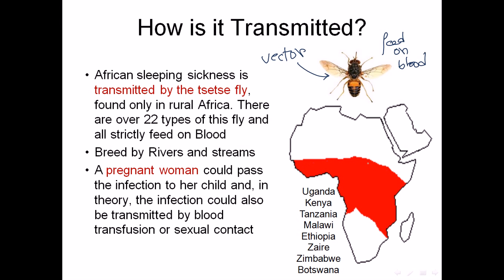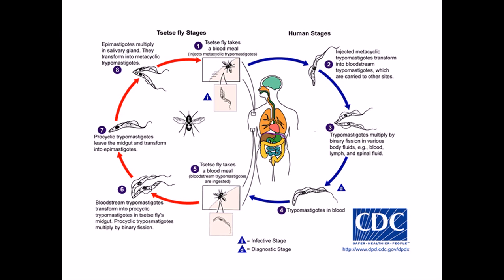Looking at the African map, the red region covering Uganda, Kenya, Tanzania, Malawi, Ethiopia, and throughout middle, north, and east Africa shows where tsetse flies are found. This represents a widespread and tough situation throughout Africa.